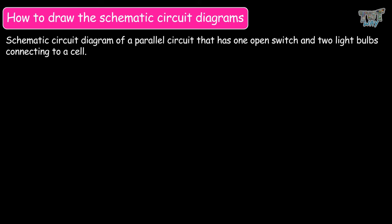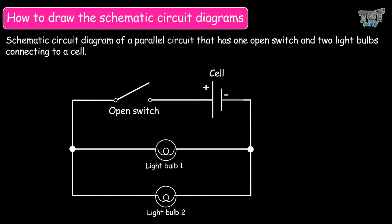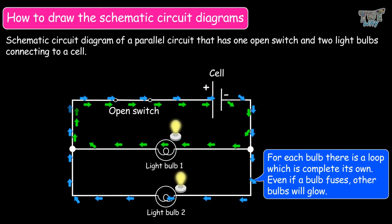Now we will see how to draw a schematic diagram of a parallel circuit that has one open switch and two light bulbs connecting to a cell. Draw a symbol of a cell and then connect it to the symbol of an open switch. Then draw the symbols of two bulbs in parallel. You can see how we have drawn a parallel circuit — it seems like a ladder. The bulbs are not connected in series, that is, in one loop. For each bulb, there is a complete loop. Even if a bulb fuses, the other bulbs will glow.